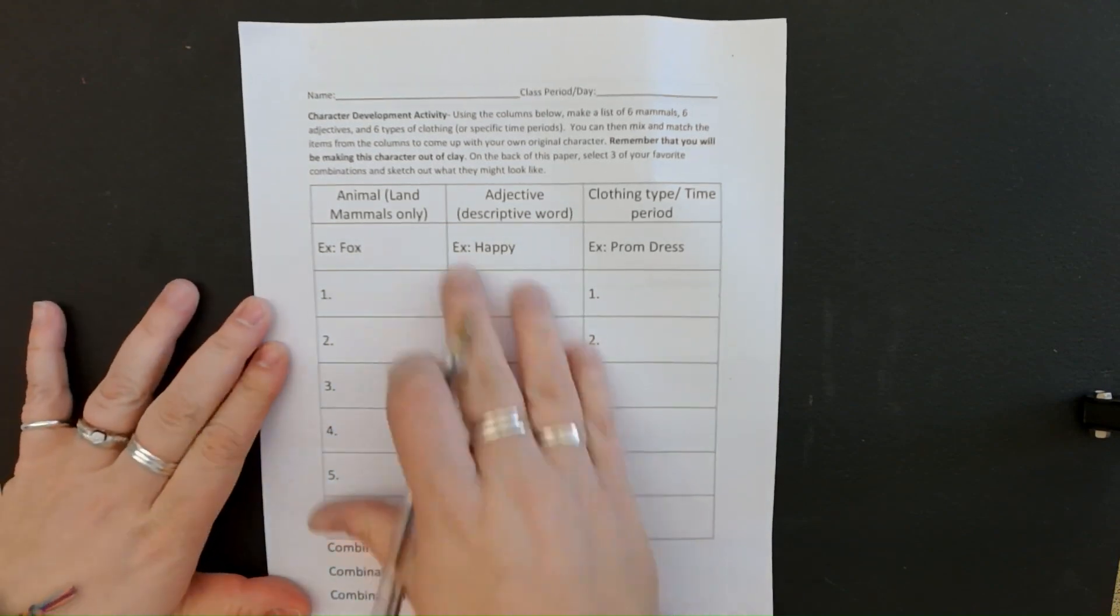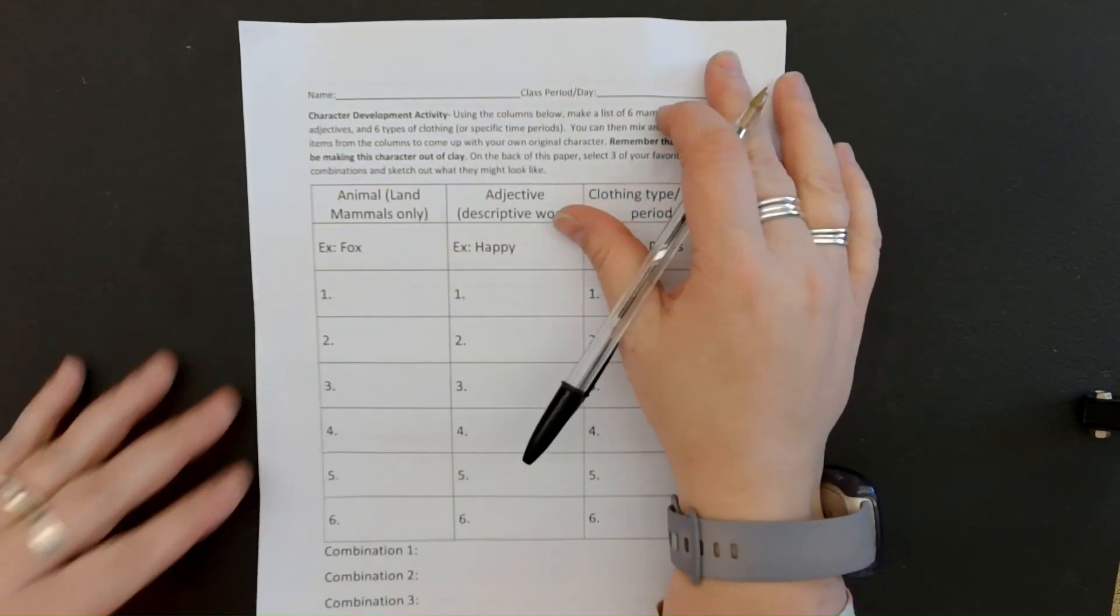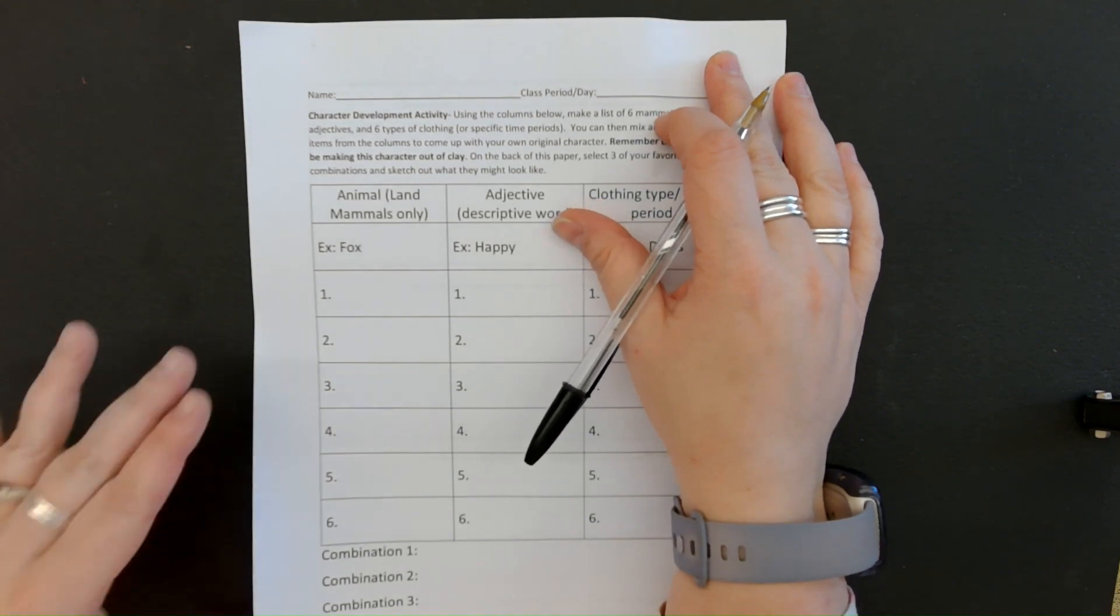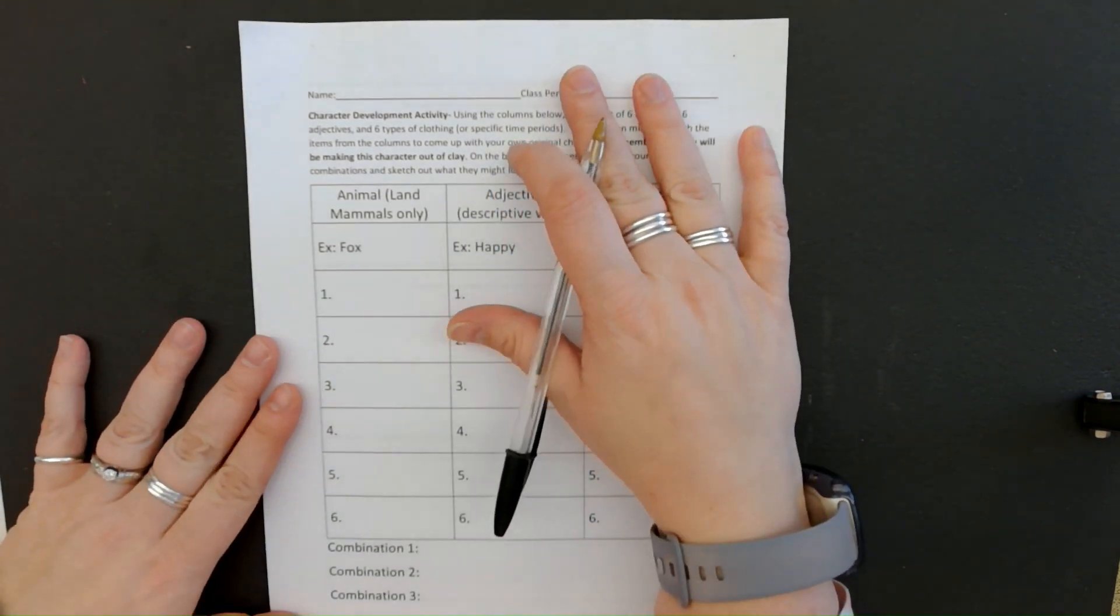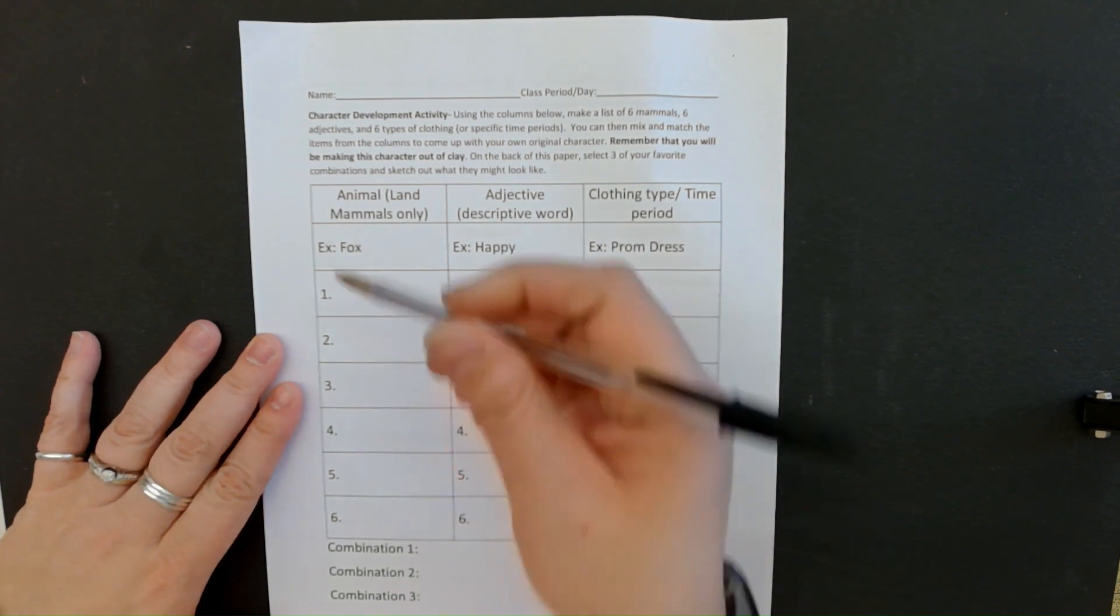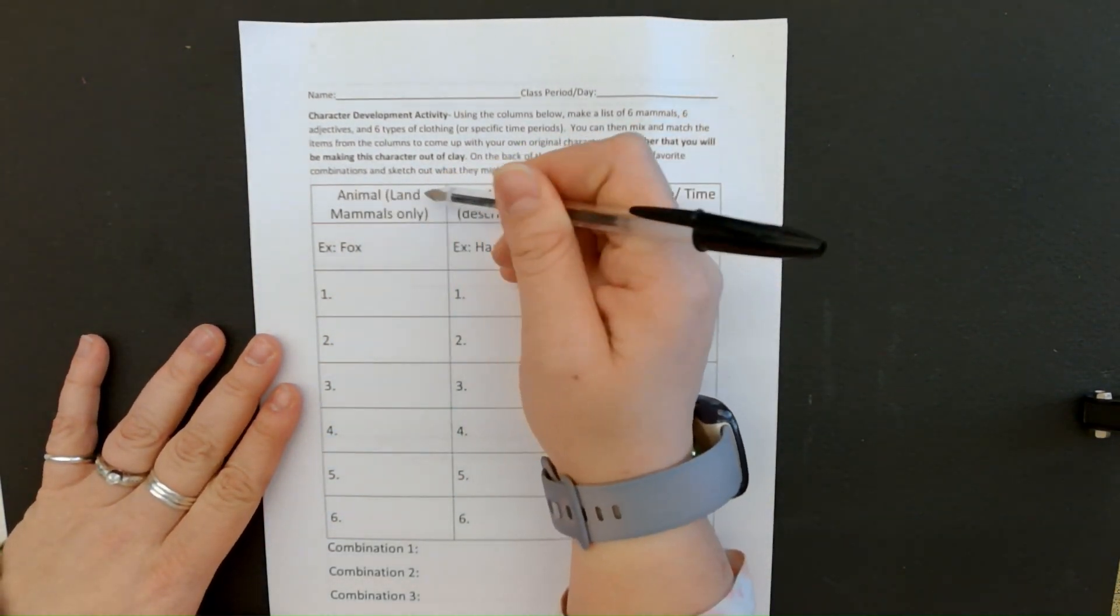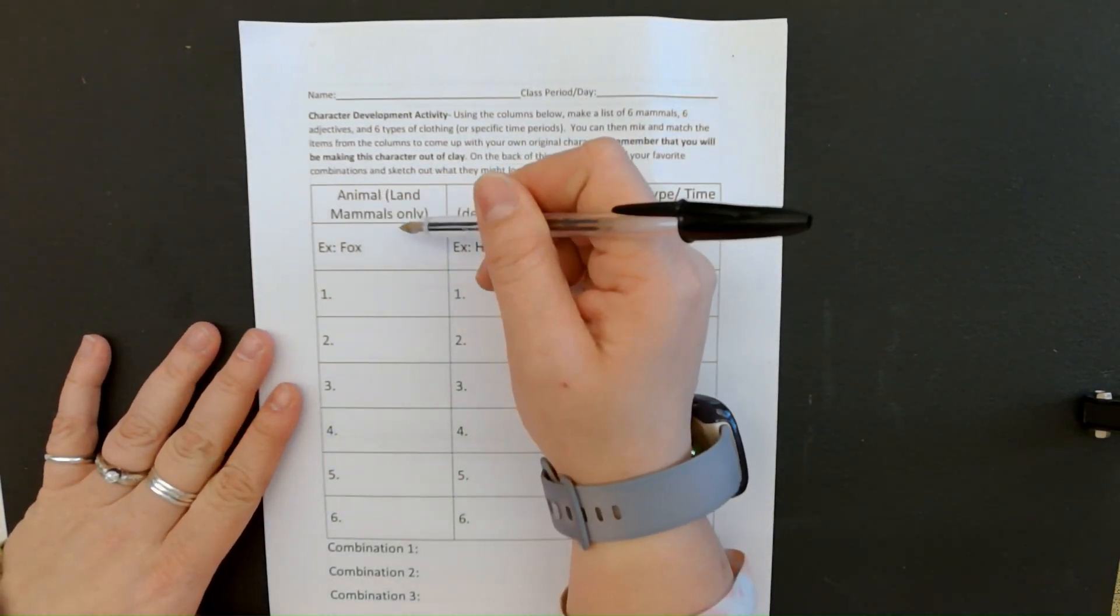So to start our clay character project, we're going to have to develop our character. The way we're going to be doing this is with this activity. The first column here, you're going to be selecting an animal. And I want you guys to pick land mammals only.